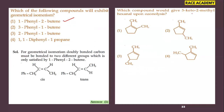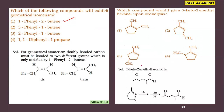Which compound would give 5-keto-2-methylhexanal upon ozonolysis? In ozonolysis, the double bond is cleaved. Working backward from 5-keto-2-methylhexanal — the keto group is at position 5 and the aldehyde at position 1 — the second option among the given compounds gives this product upon ozonolysis.